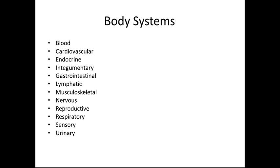The endocrine system produces hormones that help our body function, such as thyroid hormone, which regulates our metabolism and blood pressure, and the pancreas, which produces insulin to help us absorb glucose and convert it to ATP. Many other endocrine glands help our body maintain homeostasis.